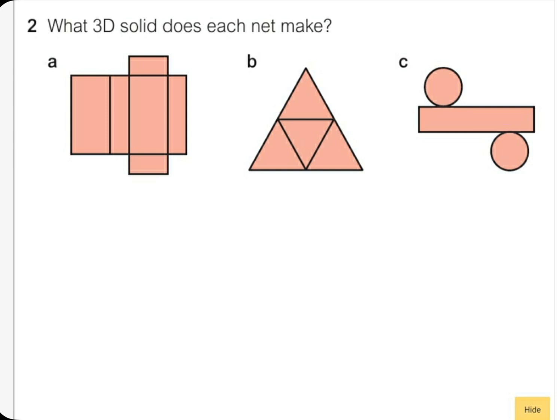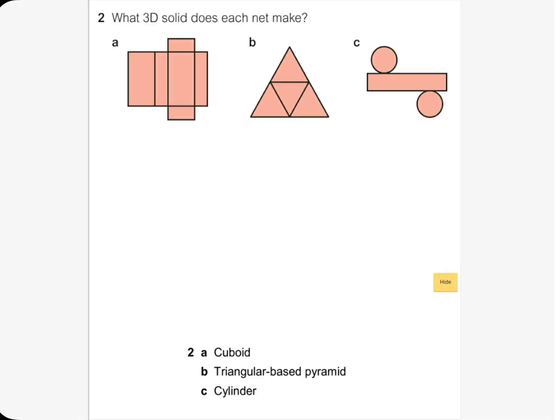So they're going to be two circles like that and closed by a rectangle. So this shape will be what? It's going to be a cylinder. Now let's take a look at the answers here.